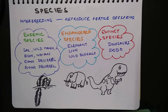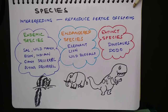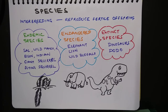Species: the definition of species is that members of a species should be able to interbreed among themselves to reproduce fertile offspring — interbreeding and fertile offspring are the key words. For example, a mule is the offspring of a male donkey and a female horse. Horses and donkeys are different species; they are able to interbreed, but the offspring — the mule — is generally infertile and cannot breed.